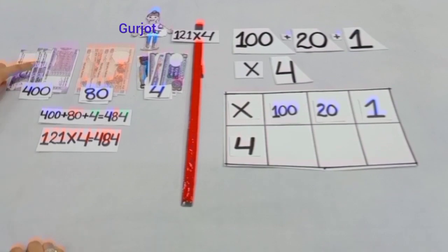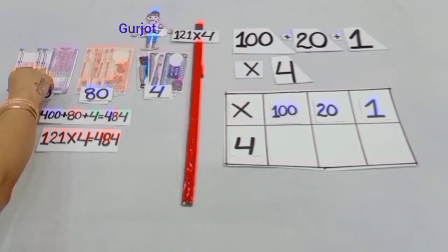Yesterday, we had 4 notes of Rs. 100 means 400 Rs. And today, when we will multiply 100 by 4, we will get 400.